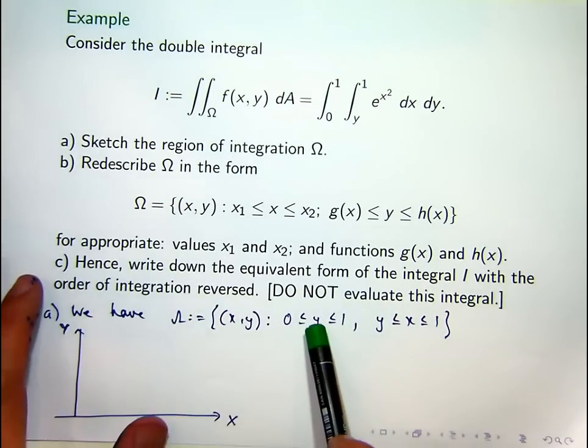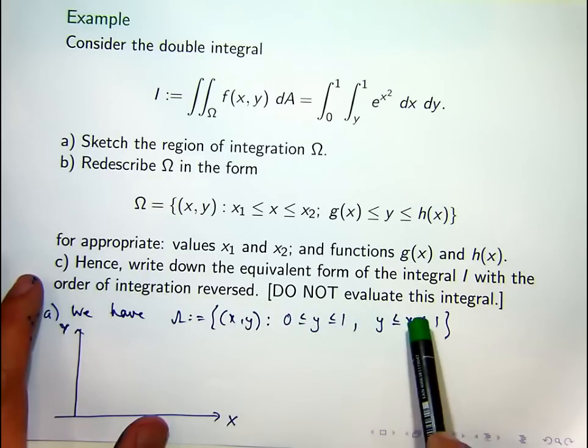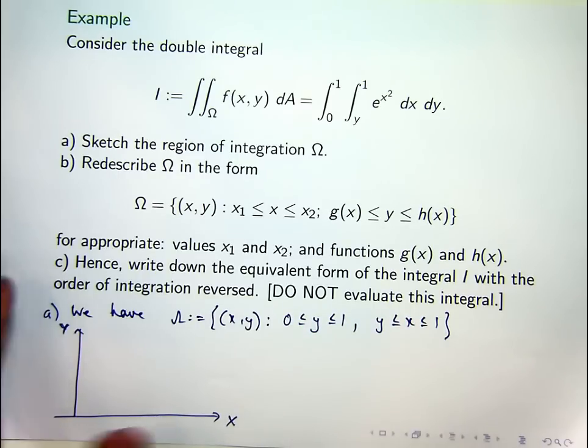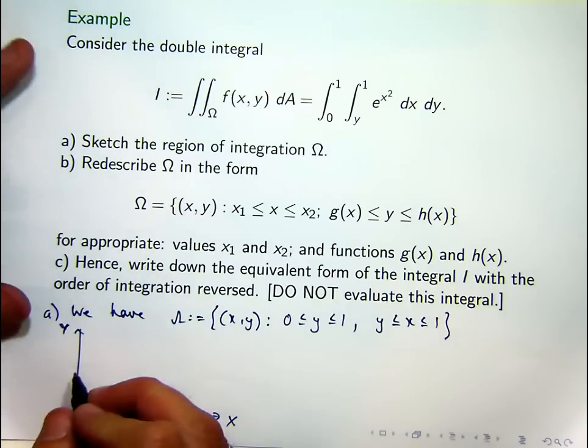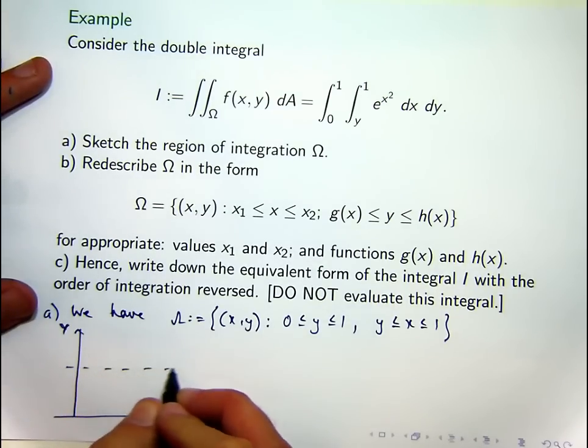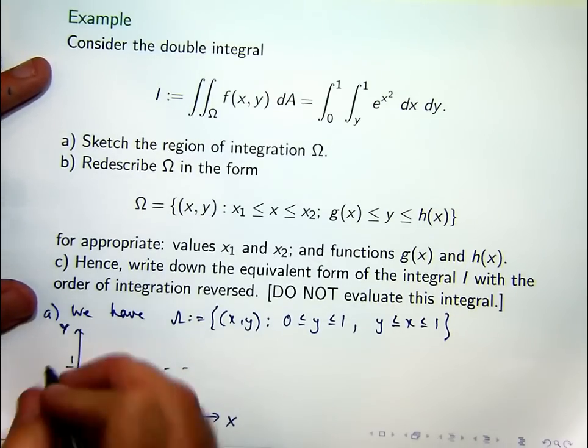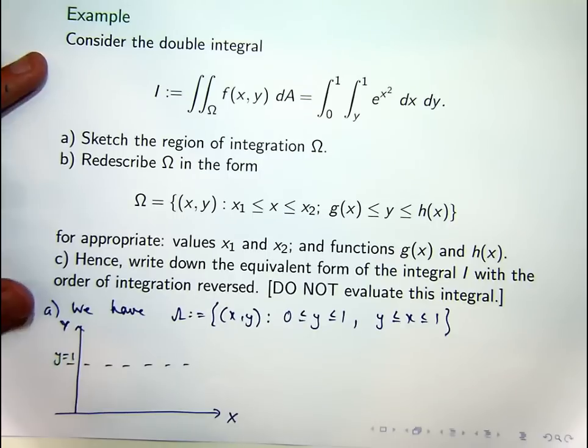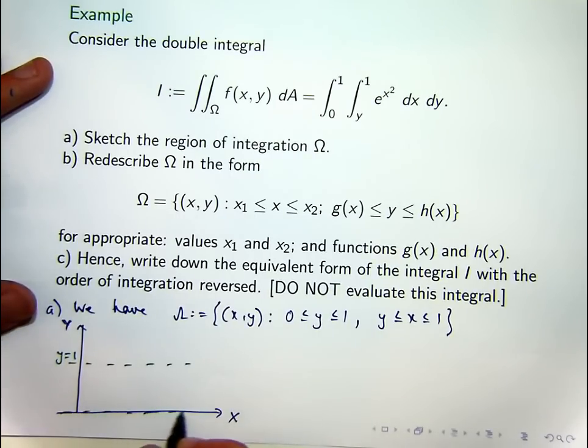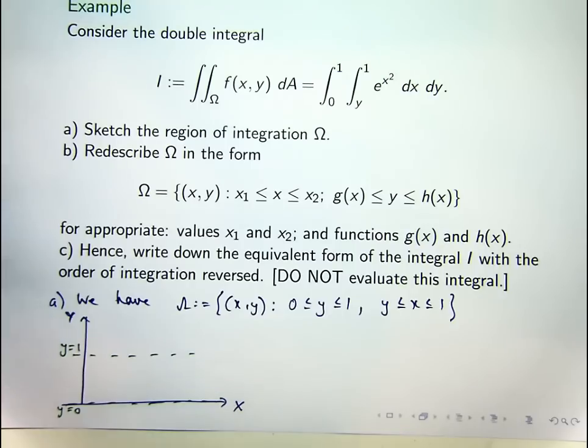We want to sketch in the lines y equals 0, y equals 1, x equals y, and x equals 1. Okay, so there's the line y equals 1, the x axis is the line y equals 0.